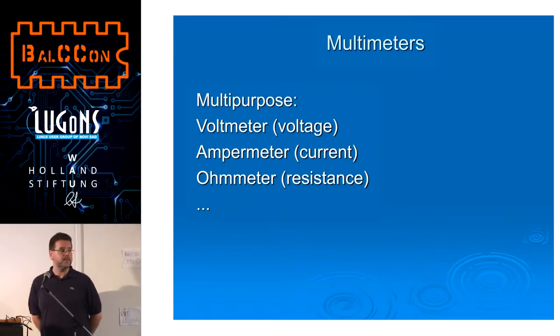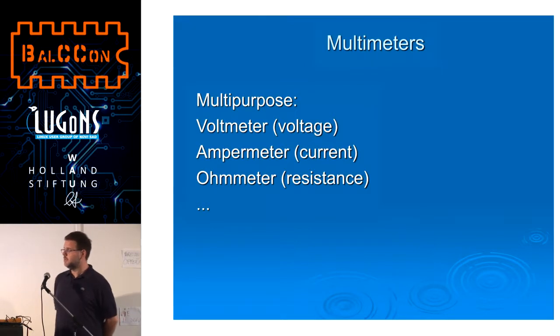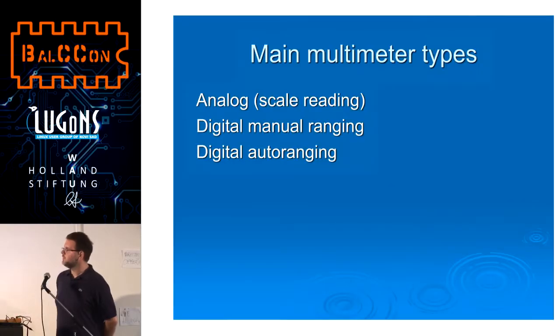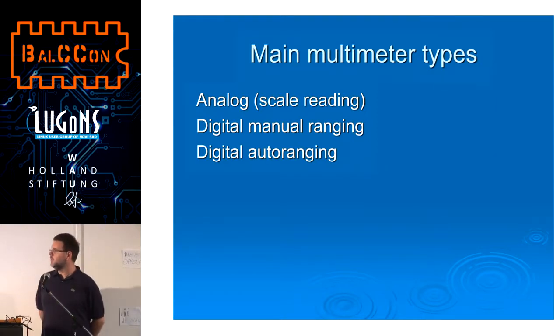These are devices that measure some basic electrical values like voltage, current, and resistance. For each of those values you would use a specific instrument: voltmeter for voltage, ammeter for current, ohmmeter for resistance. But some clever guy thought he could put all these things into one device and call it a multimeter. Later they added a bunch of other useful stuff, and we got today's modern multimeters.